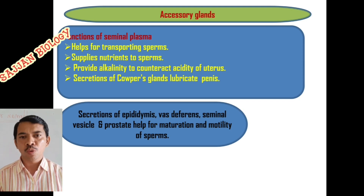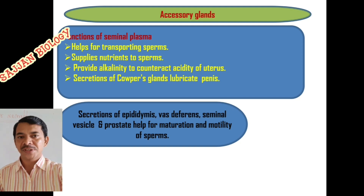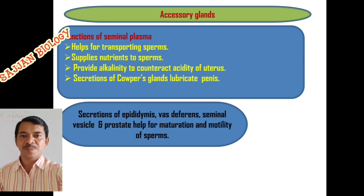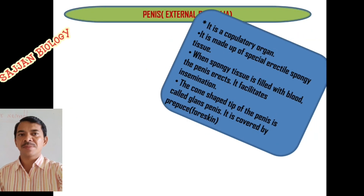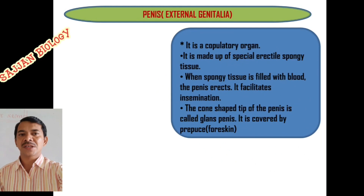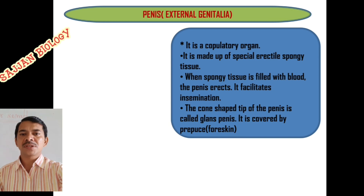The secretions of the epididymis, vas deferens, seminal vesicle, and prostate help for maturation and motility of sperms. The last part of the male reproductive system is the penis, called external genitalia. It is a copulatory organ made up of special erectile spongy tissue — that is, corpora cavernosum and corpus spongiosum are the two important tissues.